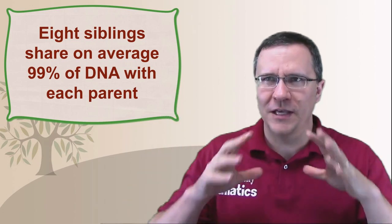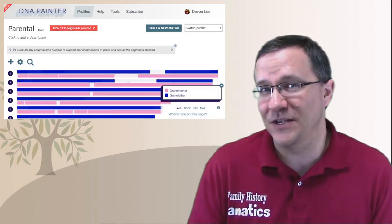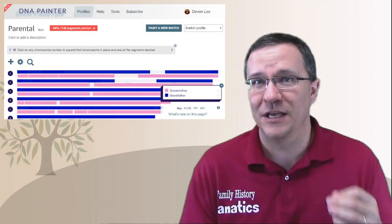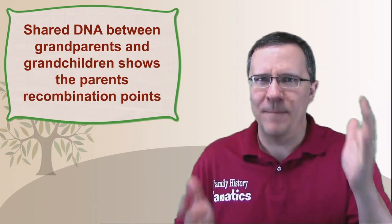DNA doesn't theoretically combine and recombine exactly how statistics shows us, so we can use some of the information that people have already gathered to see what this range is. We know with two siblings it should be around 75%, but what is the range of that? In the Genetic Genealogy Tips and Techniques Facebook group, a member suggested using DNA Painter in order to do this. This was a brilliant idea because if you have grandparents and their grandchildren, when you're looking at where those two match in DNA, you're actually looking at the parents and where the recombinations were. Since that's what we want to find out, we can compare a set of siblings to a grandparent to figure out how much of the parents' DNA that set of siblings has. Let me show you how to do that in DNA Painter.